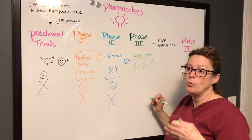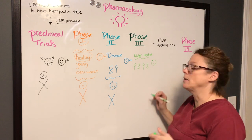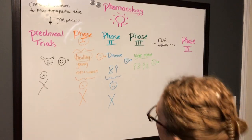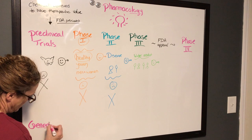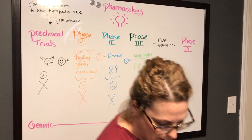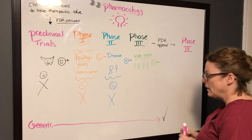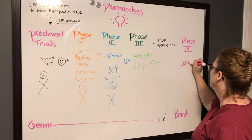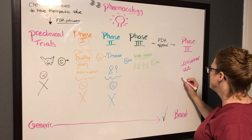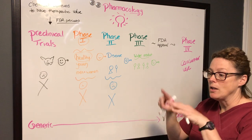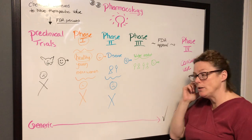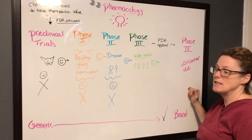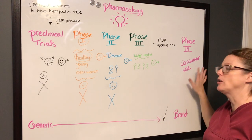If the drug is deemed therapeutic with the intended effect and minimal harmful adverse effects, it goes through FDA approval. Up to this point it has only had a generic name — the name that represents the compounds in the drug. Once it receives approval, the company making the drug can give it a brand name and it becomes available for consumer use. The FDA continues to follow the drug — this never leaves the FDA's area of responsibility — because sometimes once it's opened to the wider population we see adverse events not seen in earlier stages. Drugs have been pulled even after going through the entire trial process. These are drugs in phase four, under continued evaluation.